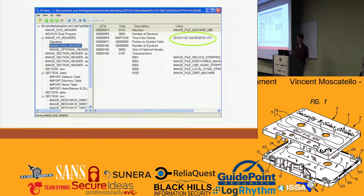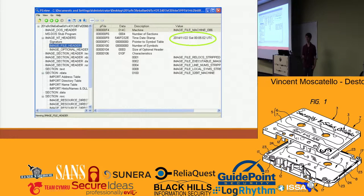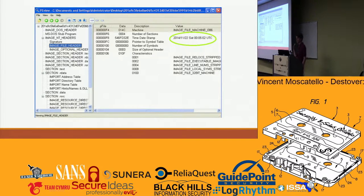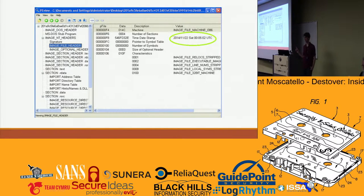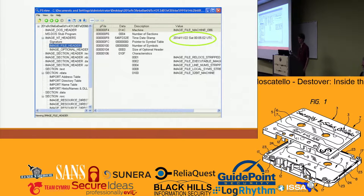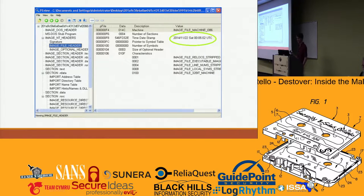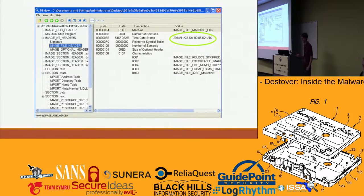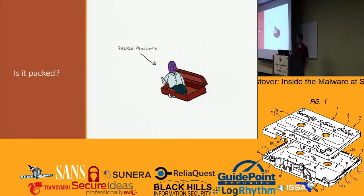Another really useful tool is called PEView. This gives some pretty significant information — like exactly when the malware sample was compiled. This date, circled in green, is a little suspicious: it's November 22nd, 2014. The attack on Sony Entertainment happened the 23rd or 24th. So, hmm, interesting.